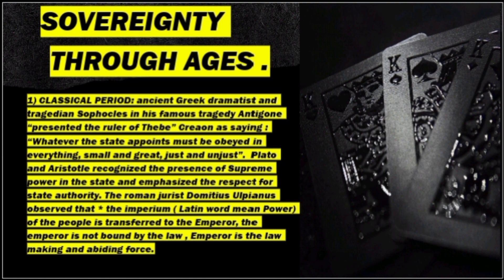Aristotle similarly said the state is to be obeyed in its true terms. Roman jurist Domitius Ulpian also said that sovereignty of the people is transferred to the emperor — the emperor is not bound by the law; the emperor is the law-making and law-abiding force. Superior or absolute power goes to the emperor and king, and the emperor is not bound; his laws are the abiding force.